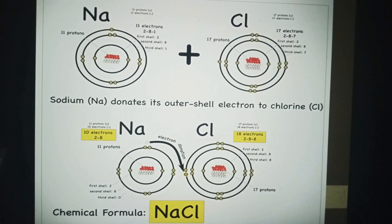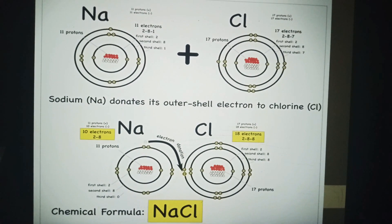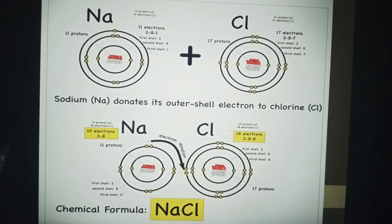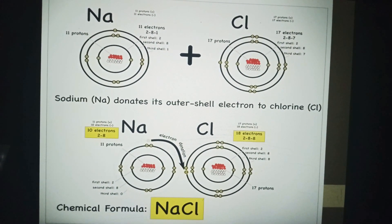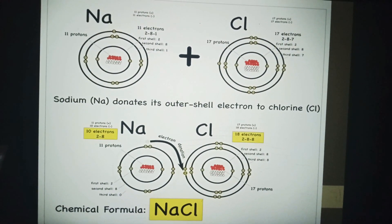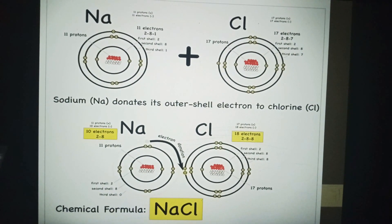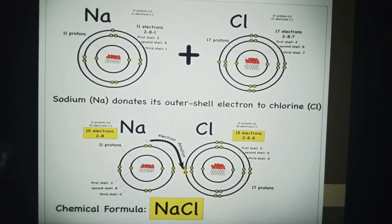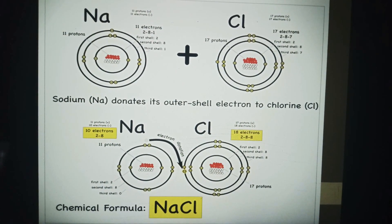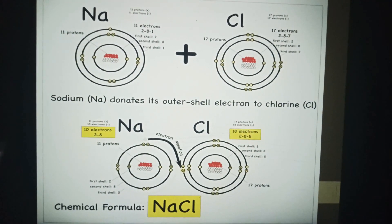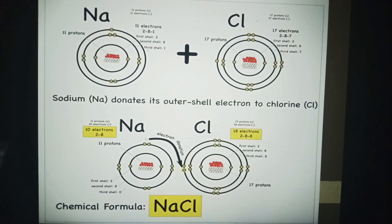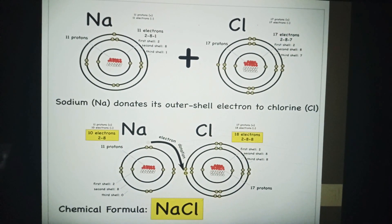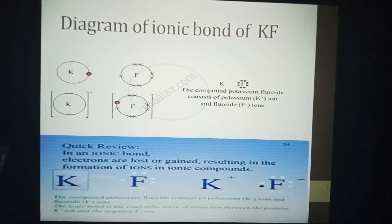You have to draw the structure of sodium chloride and write the chemical formula. You will show the type of ionic bonding between Na and Cl — that is sodium chloride, your table salt.